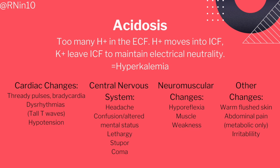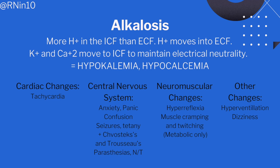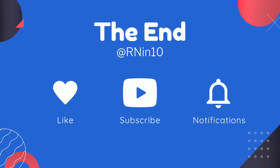With acidosis we have too many hydrogen ions. This causes hyperkalemia and is responsible for signs and symptoms that reflect a theme of slowing down, like hypotension, hyporeflexia, bradycardia, and weakness. Both metabolic and respiratory alkalosis signs and symptoms are the same. Same with metabolic and respiratory acidosis. And that's the end of part one.